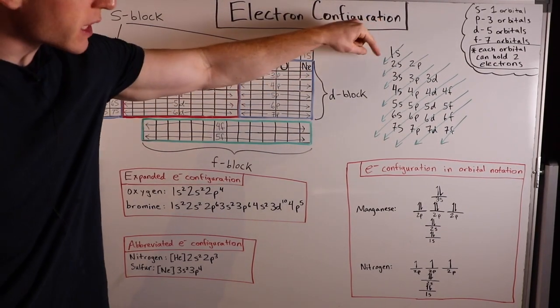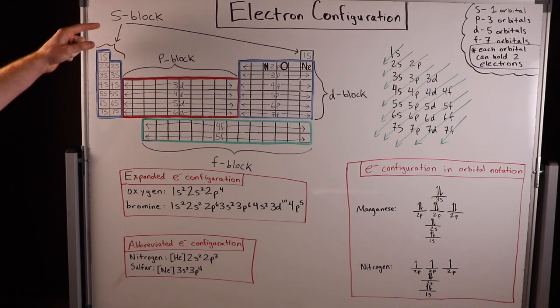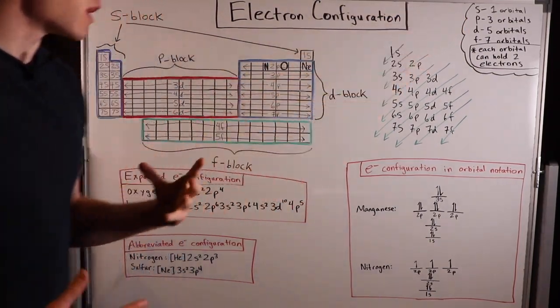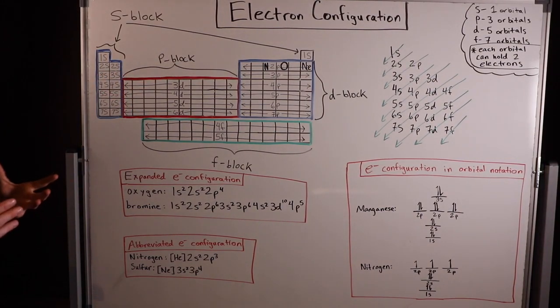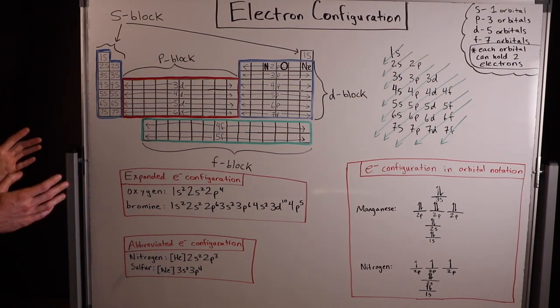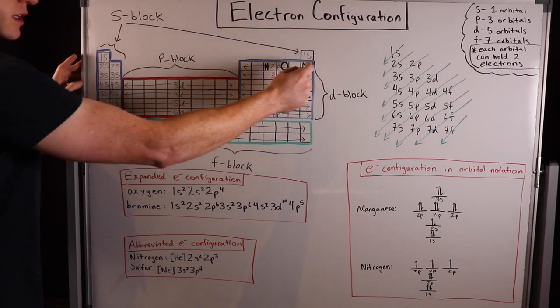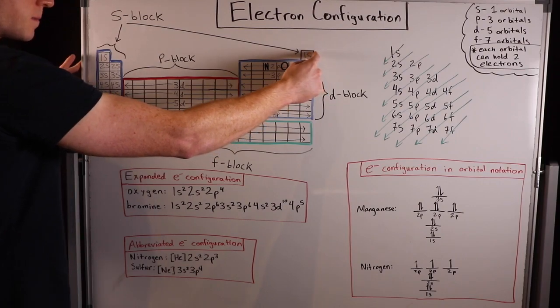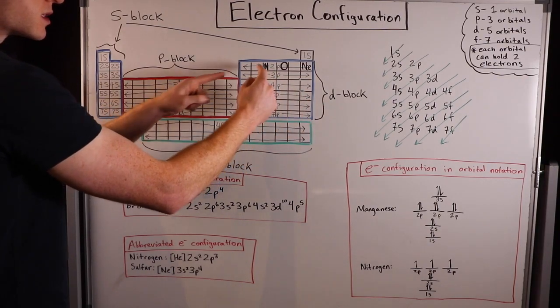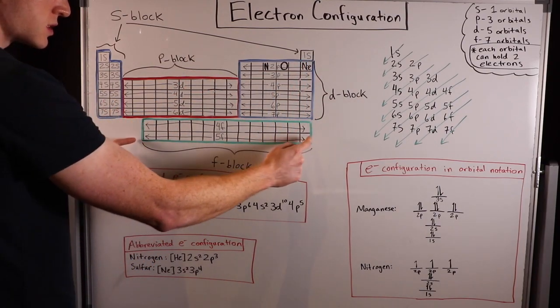You can show this filling order on the periodic table quite nicely. You can split the periodic table into what are called s, p, d, and f blocks. If you just google s, p, d, f periodic table, you'll find a picture like this. The s block consists of this blue block over here, in addition to helium right here. The p block is this red block here, the d block is this blue box over here, and the f block is the green box down here.